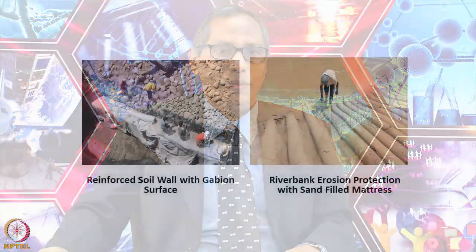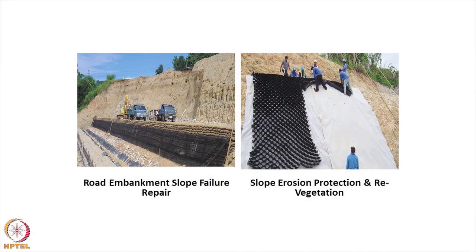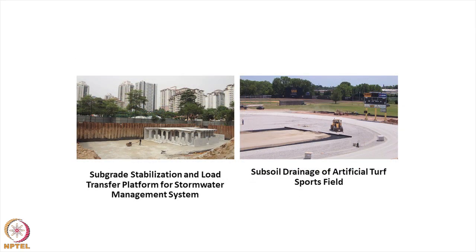You can use reinforced soil with gabion — gabion is a hexagonal galvanized mild steel mesh formed into cubes of 1m × 1m × 1m with the top lid open, filled with gravel and compacted to construct a wall. For river bank erosion protection, you can use sand-filled geosynthetic material in loop form. Other applications include road embankment construction, slope failure repair, slope erosion protection for revegetation, subgrade stabilization, load transport platforms, storm water management systems, sub-topsoil drainage, and artificial drainage fields.